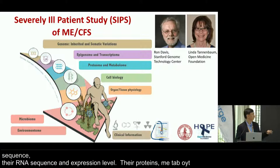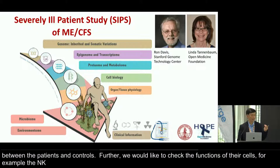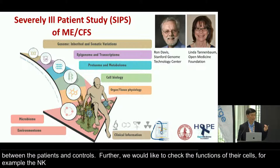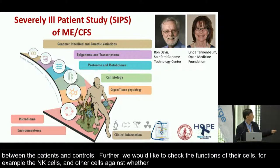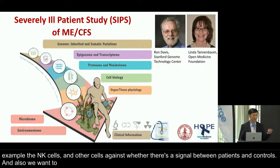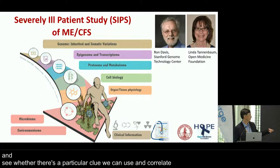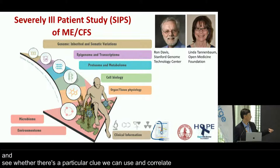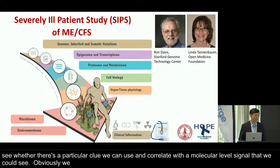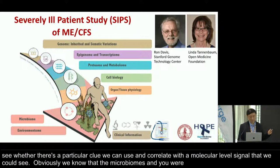Further, we wanted to check the functions of their cells — for example, NK cells and muscle cells — and see whether there's a signal between patients and controls. We also wanted to check the organ functions through clinical lab tests and correlate those with molecular level signals. And obviously, the microbiomes and environmental exposure might also contribute to the disease phenotype. So that was the plan for this study.